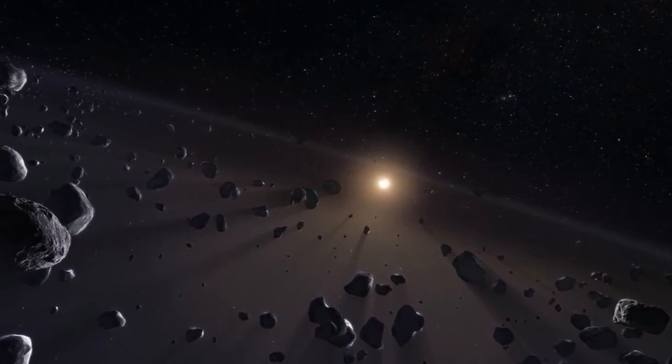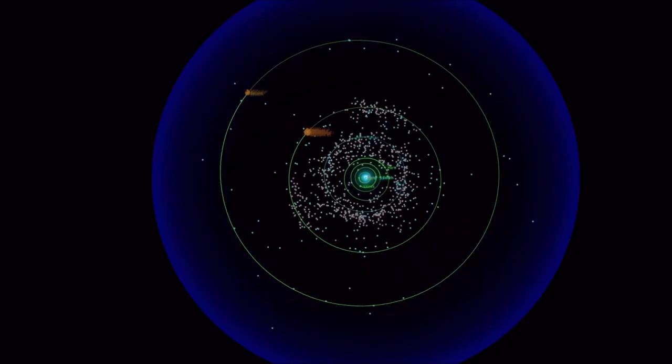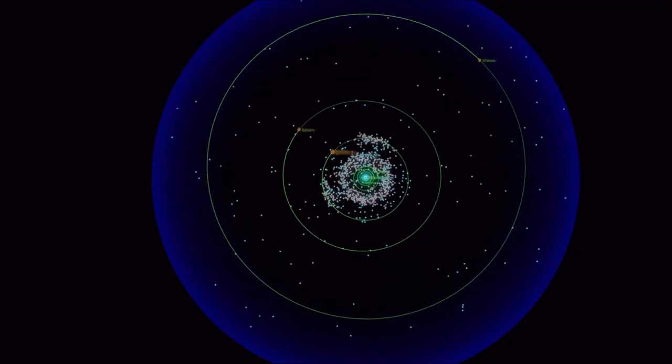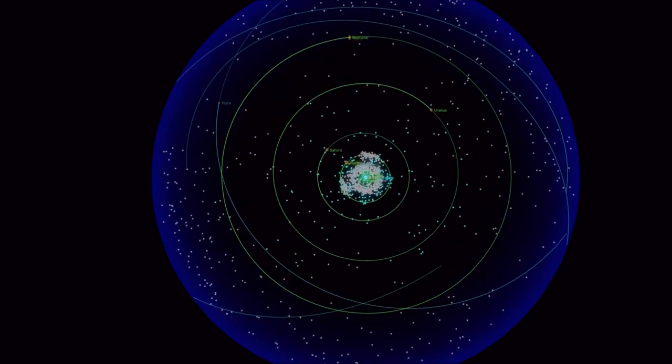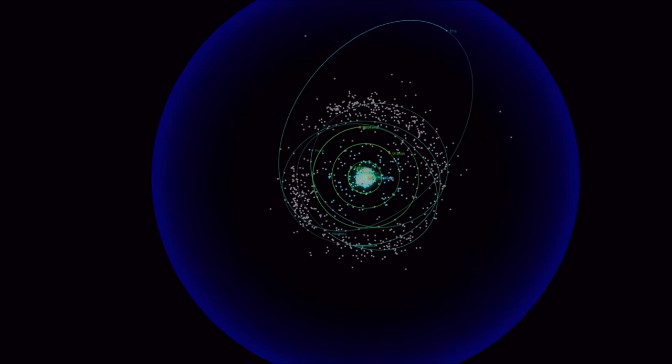It lies just beyond the orbit of Neptune and extends to about 50 astronomical units away from the Sun. This second belt is much more massive than the asteroid belt, being around 20 times wider and possibly 200 times more heavy.